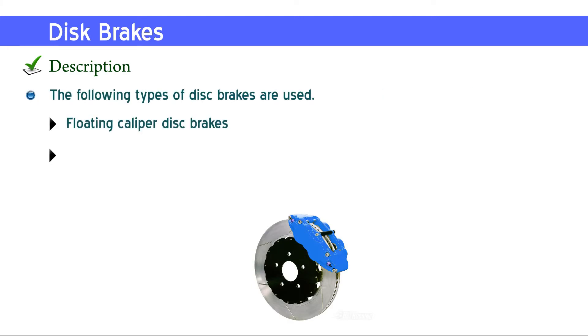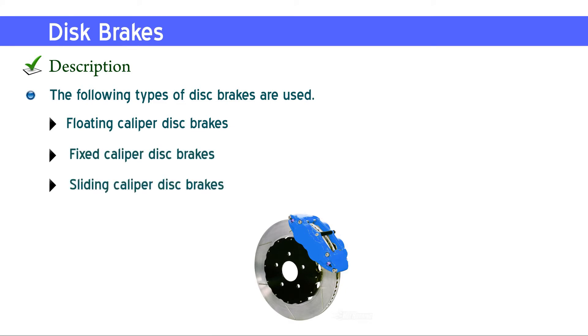The following types of disc brakes are used: floating caliper disc brakes, fixed caliper disc brakes, and sliding caliper disc brakes.